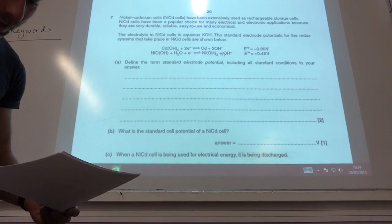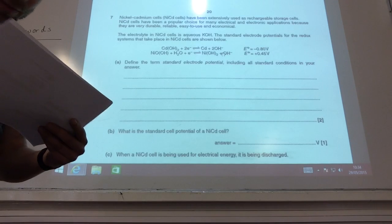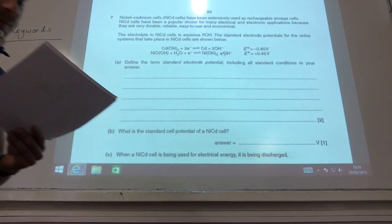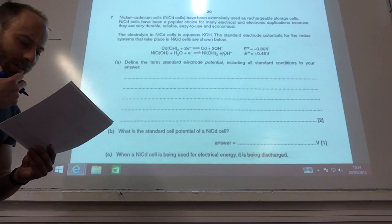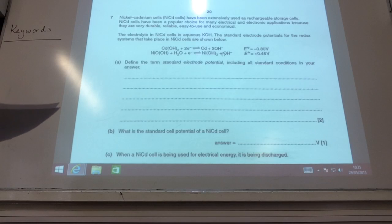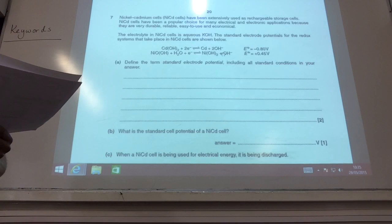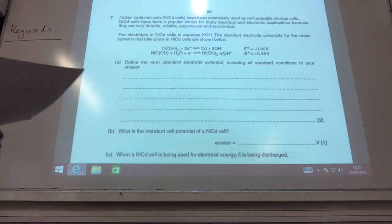Another definition which, you know, they're easy marks if you learn them. It's the EMF of a half cell compared to the standard hydrogen half cell. Standard conditions: 298 Kelvin, 1 mol per decimeter cubed for solutions, and pressure is 100 kilopascals or 1 atmosphere.